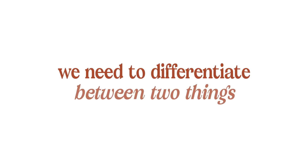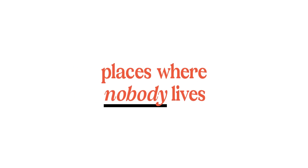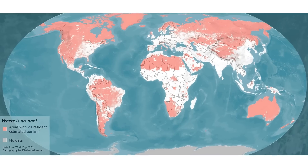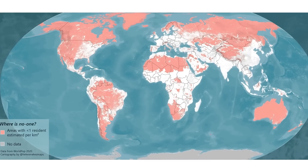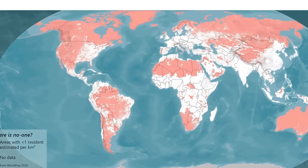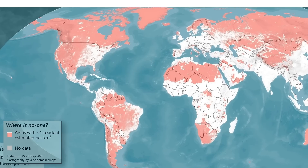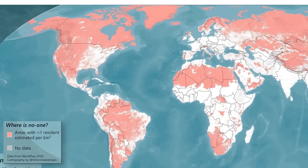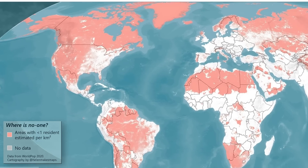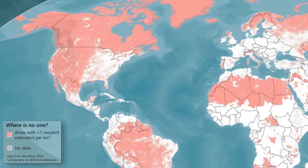First, we need to differentiate between two things: places where nobody lives and places where very few people live. In the map I used on the thumbnail, we see the first one. In the red areas, we see places that have under one inhabitant per square kilometer — so essentially places that are empty. Sure, there might be one or two people living as hermits in the middle of it, but in general they are empty.